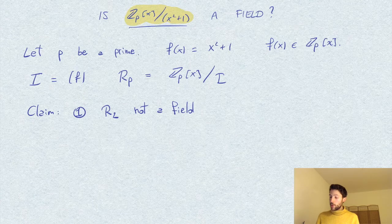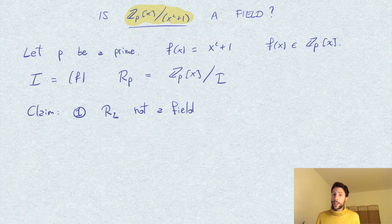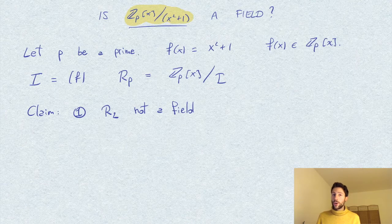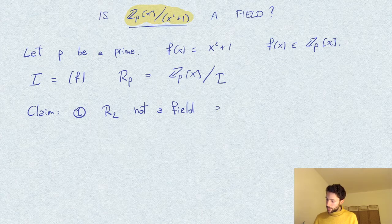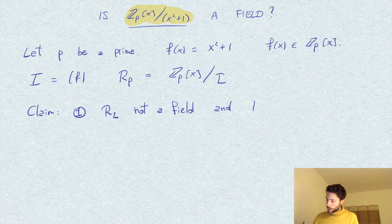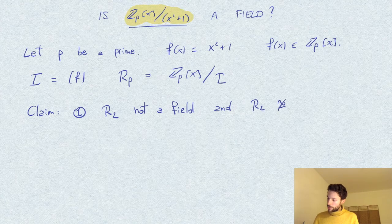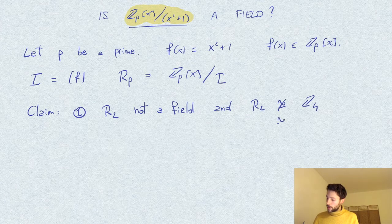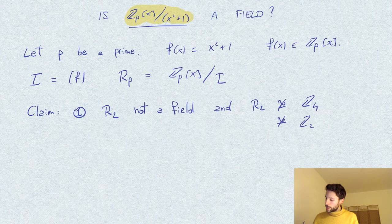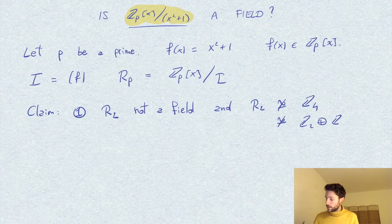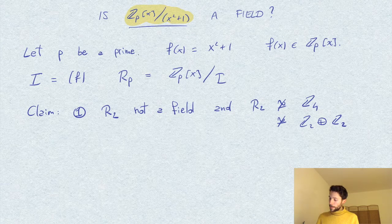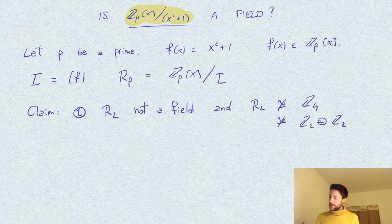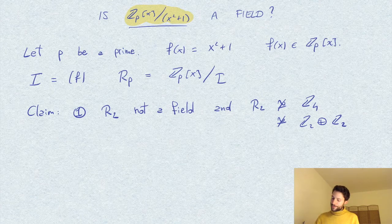So we may wonder if this ring is, for example, isomorphic to Z_4, a ring with four elements, or two copies of Z_2, and this is not the case. So I want to prove this, that R_2 is not isomorphic to neither Z_4 nor two copies of Z_2, so two rings with four elements. This would be a new example of a ring with four elements.